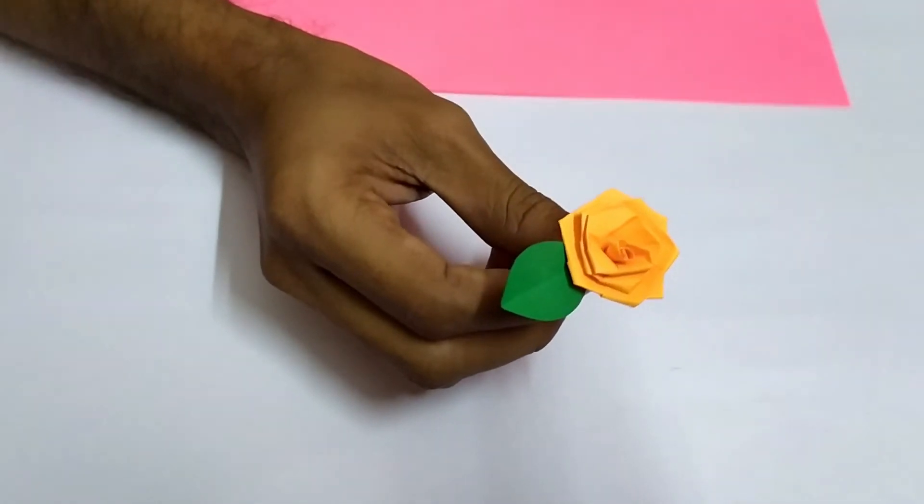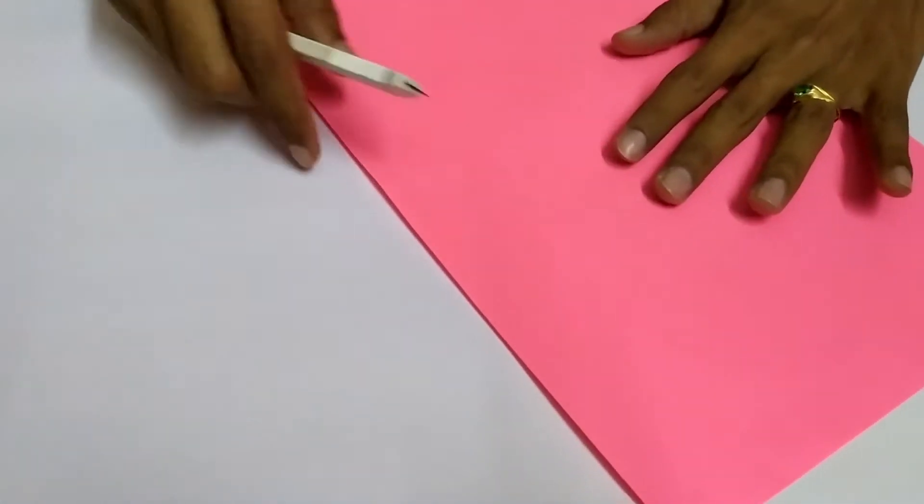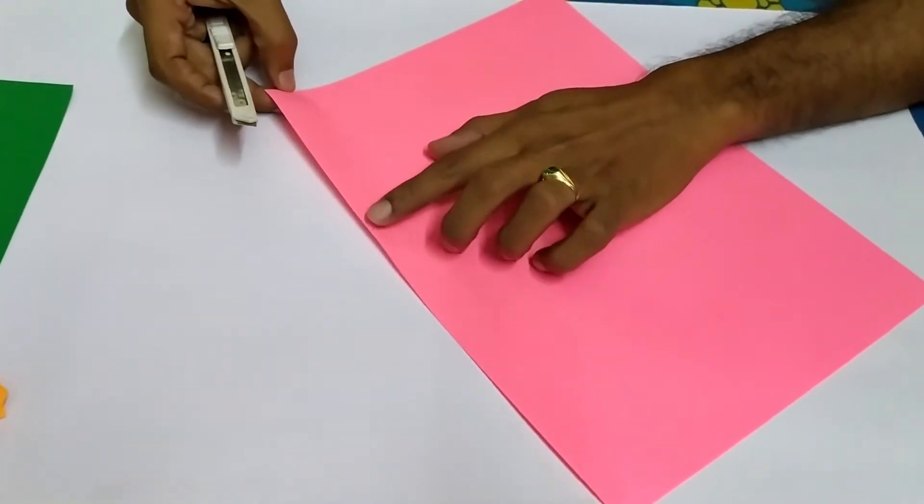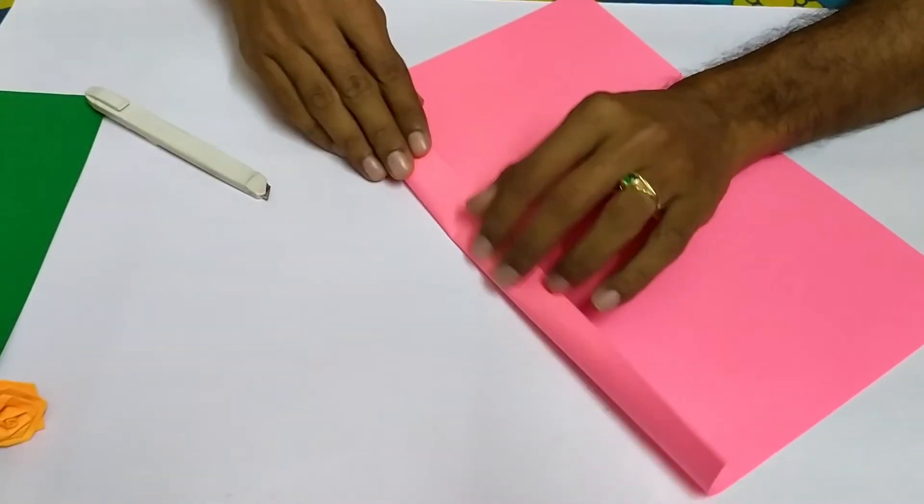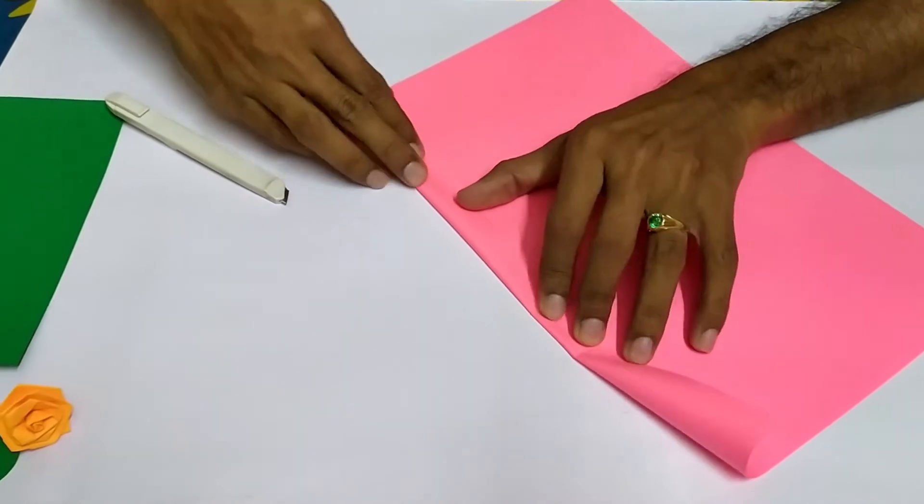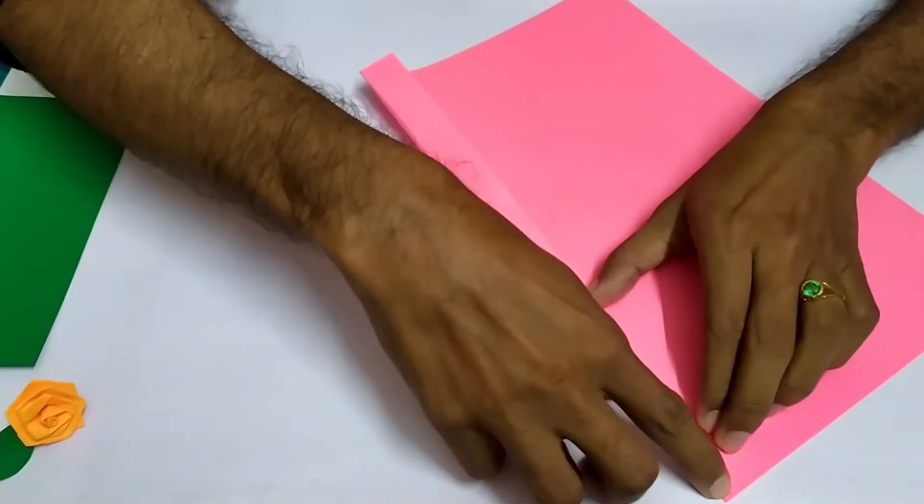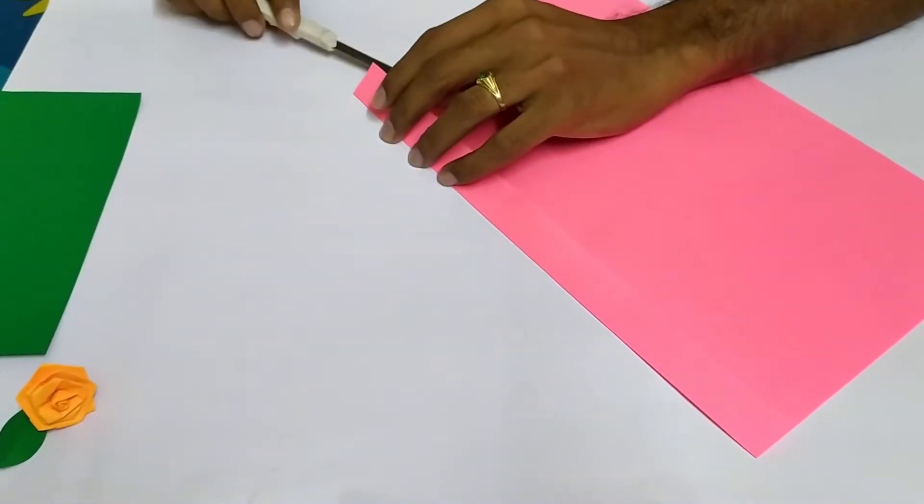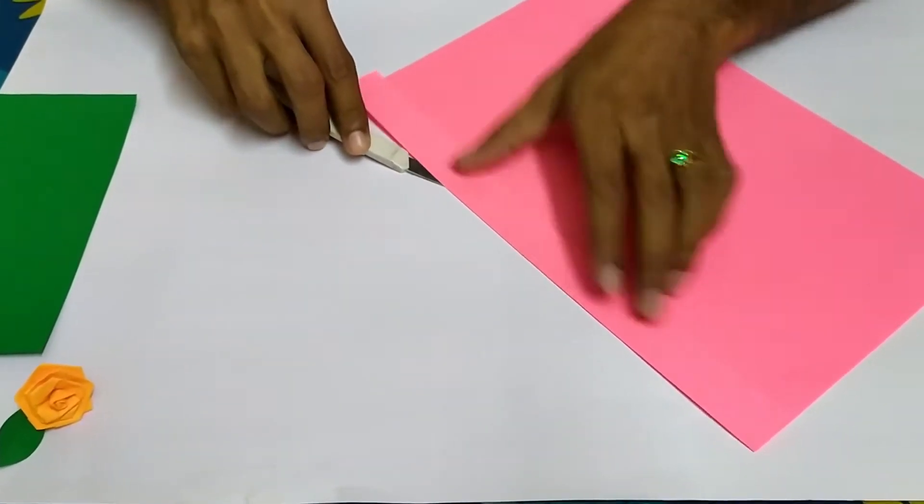First, take a paper like this, then you mark like this, just one centimeter or one and a half centimeter. You need to fold it like this, a strip. First thing is that you need to get a strip like this. For that, fold A4 size paper and then you cut it.